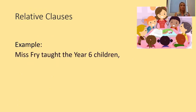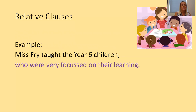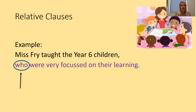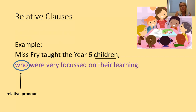Here is my first example. Main clause: 'Miss Fry taught the Year Six children.' I'm going to add a relative clause to describe and modify the noun 'children.' Now I have: 'Miss Fry taught the Year Six children, who are very focused on their learning.' We've got our relative pronoun 'who', which relates to the noun 'children.' We use 'who' as a relative pronoun when we're referring to people or a person.